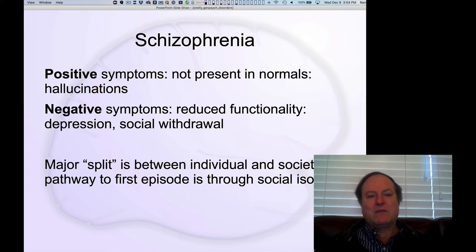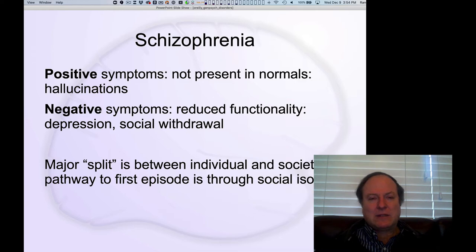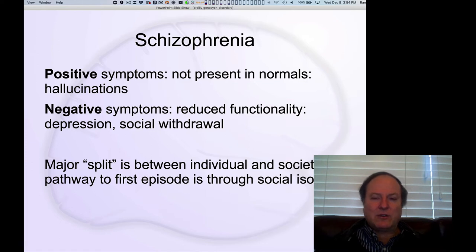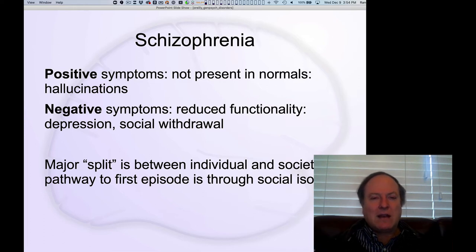This is really associated with these positive symptoms, and in particular, this idea that schizophrenics experience hallucinations. The reason these are called positive symptoms is not because they're beneficial, but rather because there's something that's not present in neurotypical people. These hallucinations and delusions do exist.